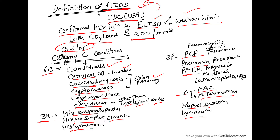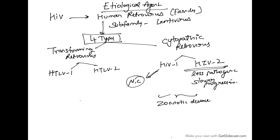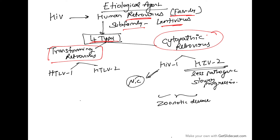Regarding the etiological agent, HIV belongs to the family of human retroviruses, with the subfamily being lentivirus. Human retroviruses are of four types: two are transforming retroviruses — HTLV-1 and HTLV-2 — and two are cytopathic retroviruses — HIV-1 and HIV-2. HIV-2 is less pathogenic with slower progression. Both are zoonotic diseases, and HIV-1 is the more common of the two.